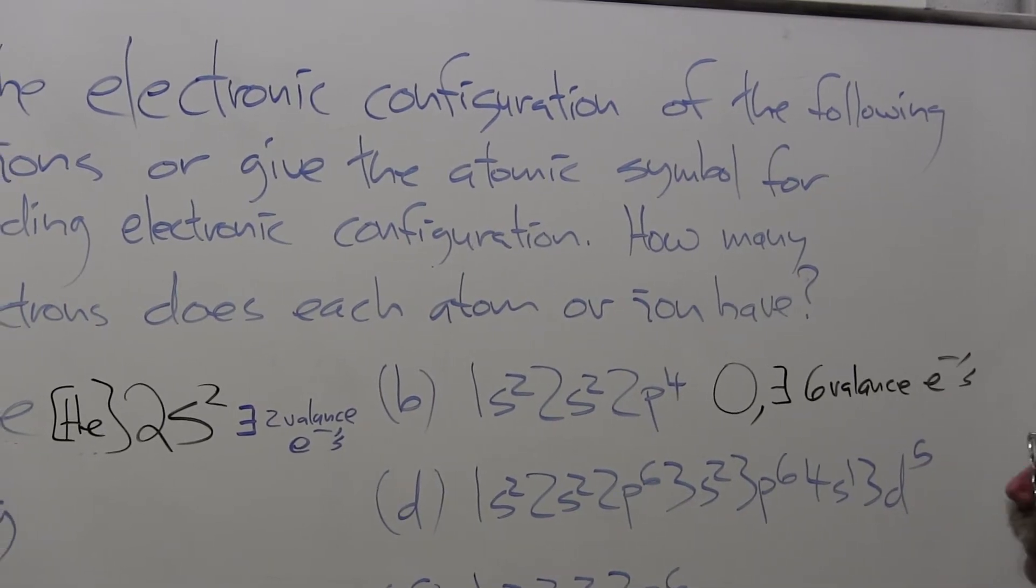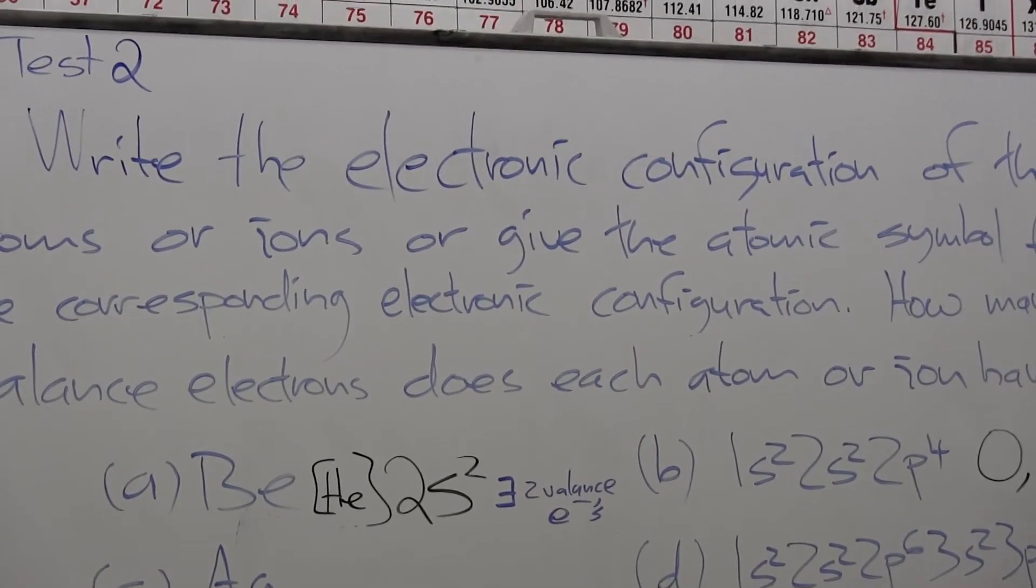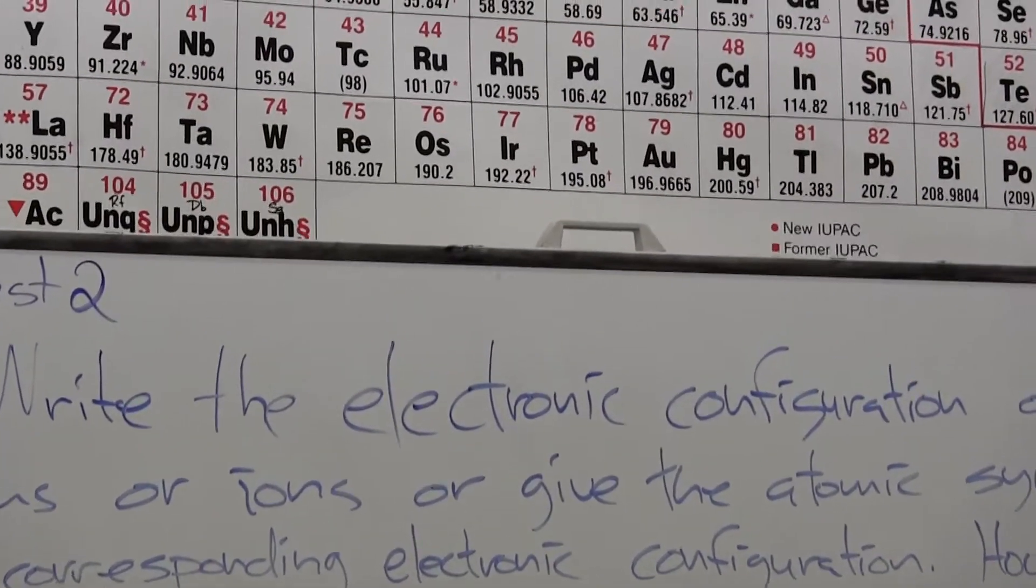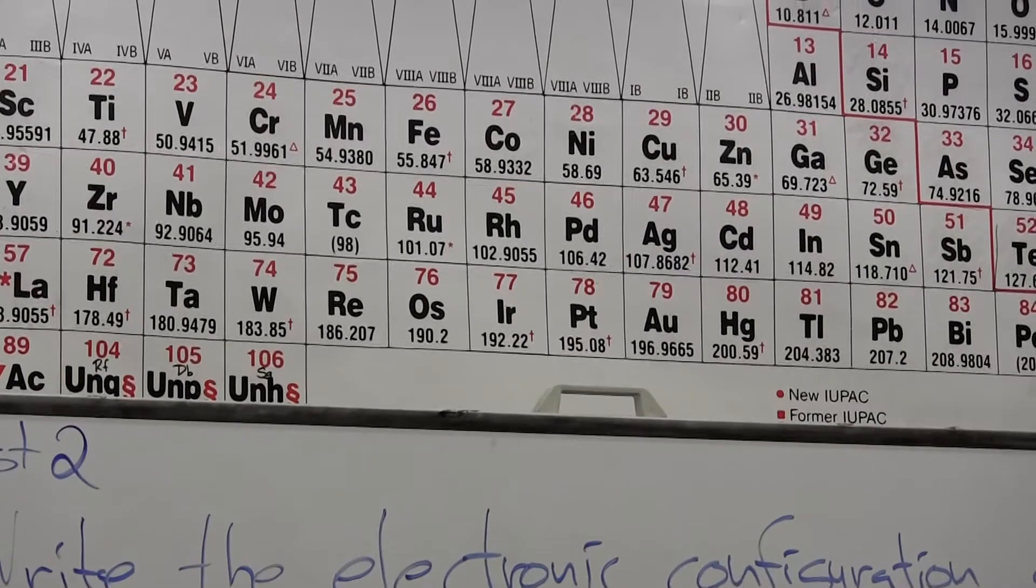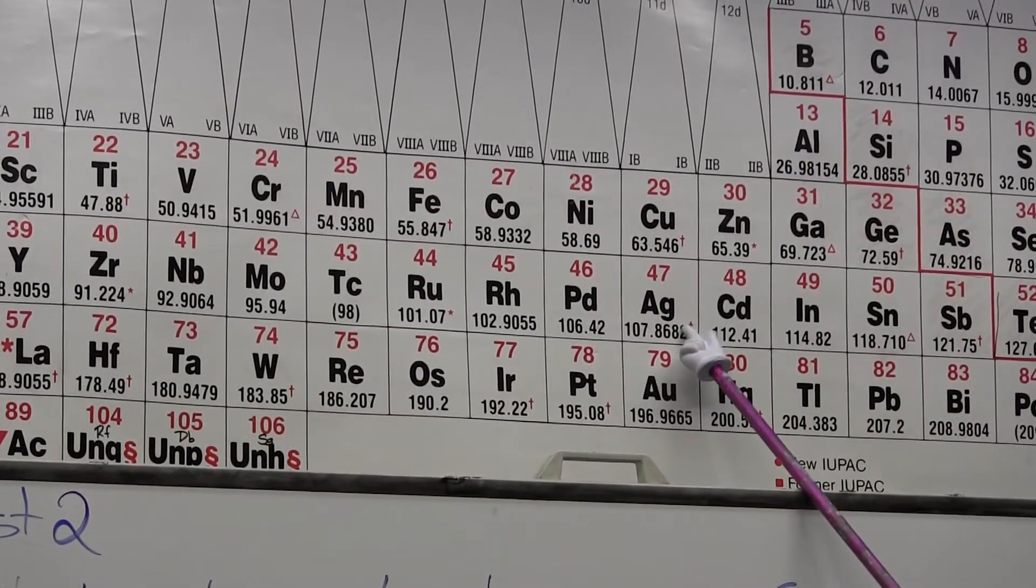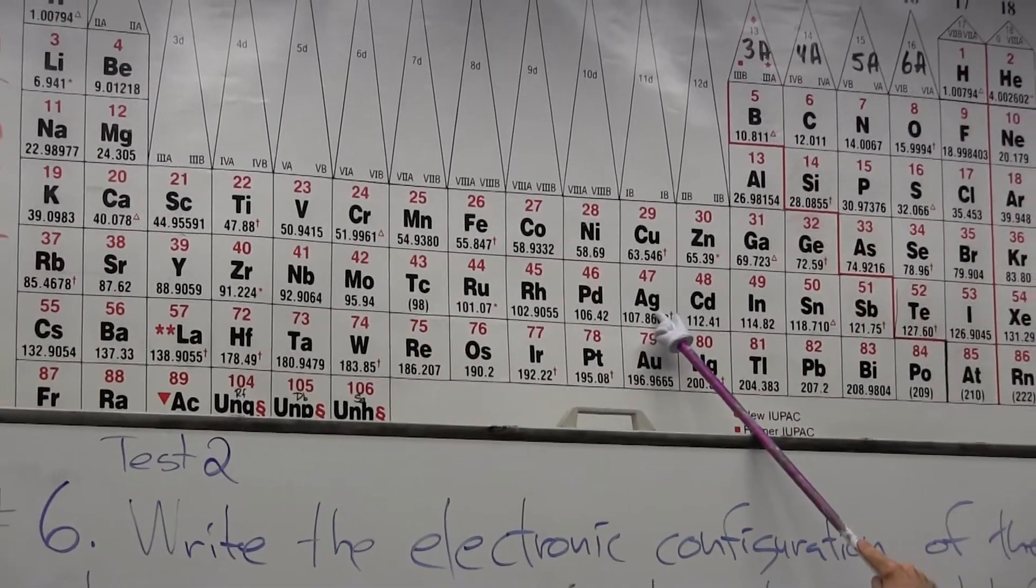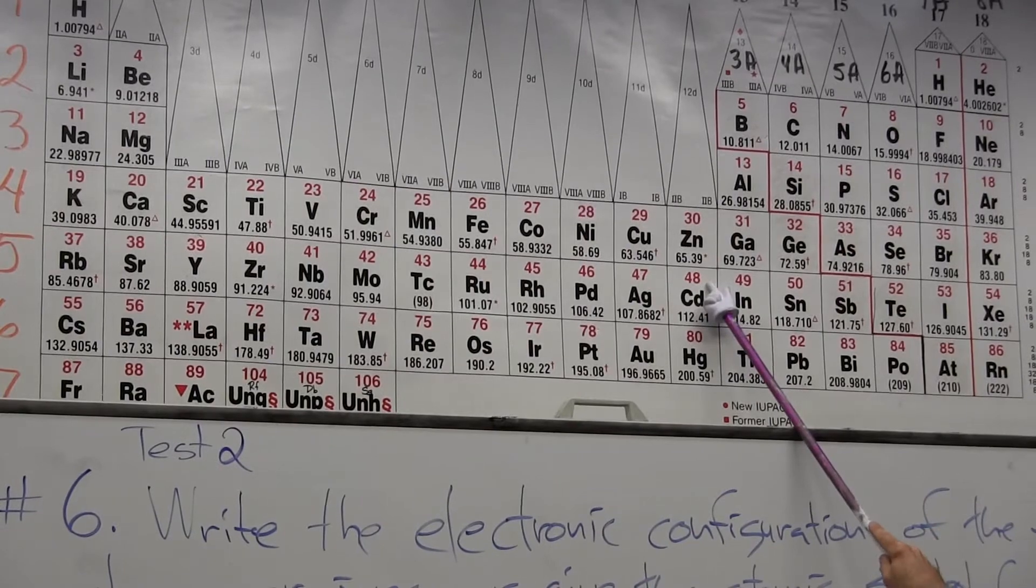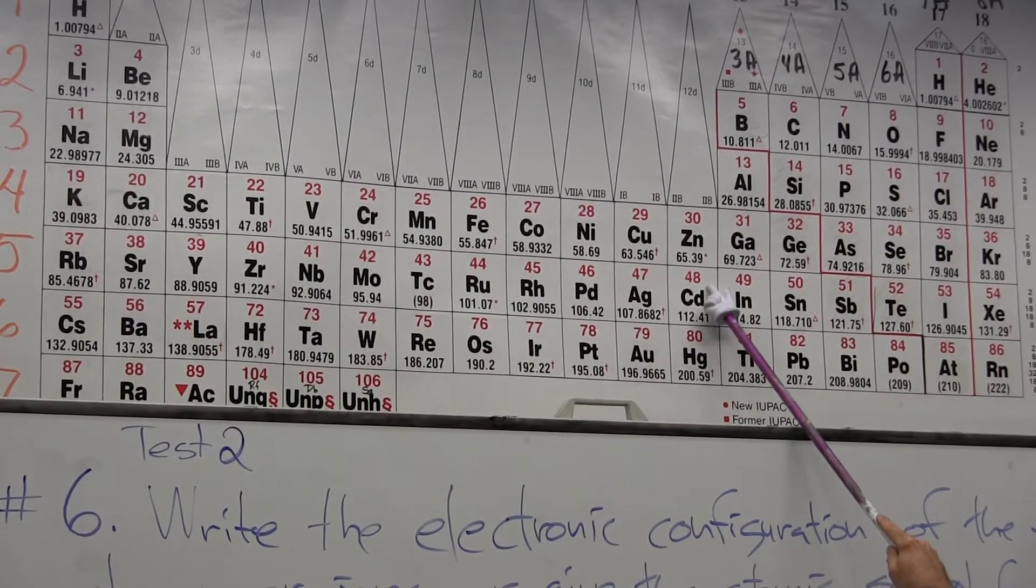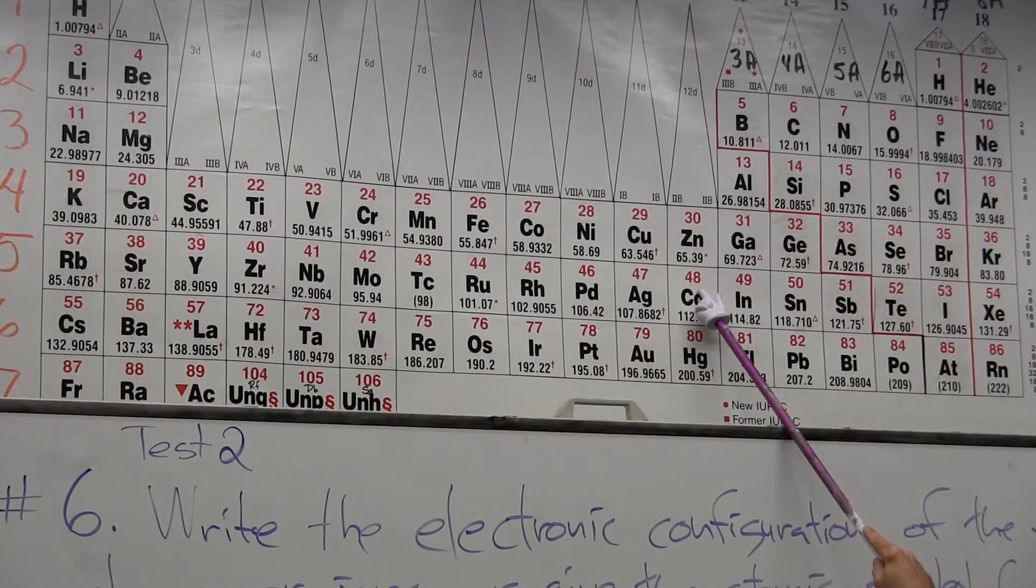The next example I have is silver. This is a periodic table. Silver is in the fifth row, so we're going to be dealing with the 4d electrons. Again, I'm one away from a filled subshell, that 4d10 electron configuration which has zero orbital momentum, so this is going to be one of the exceptions.